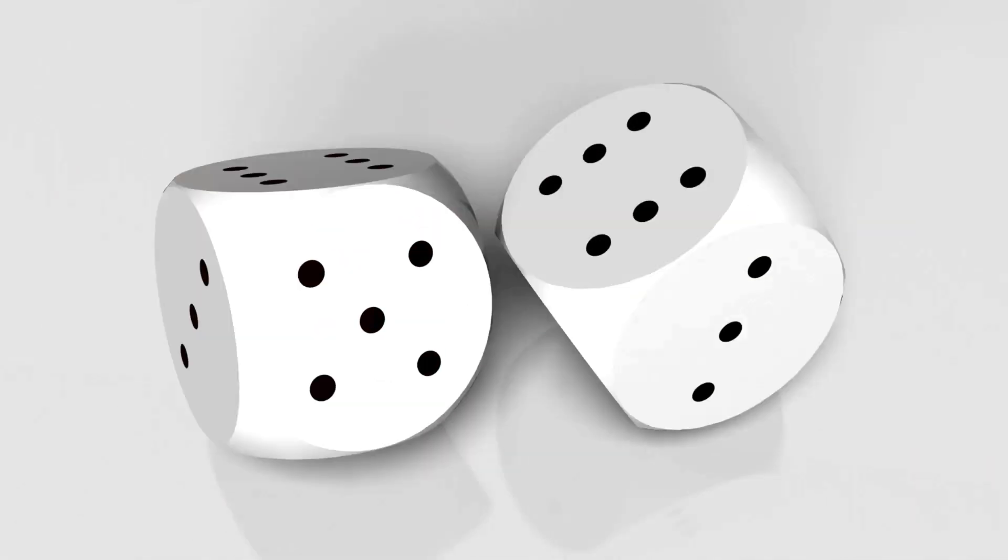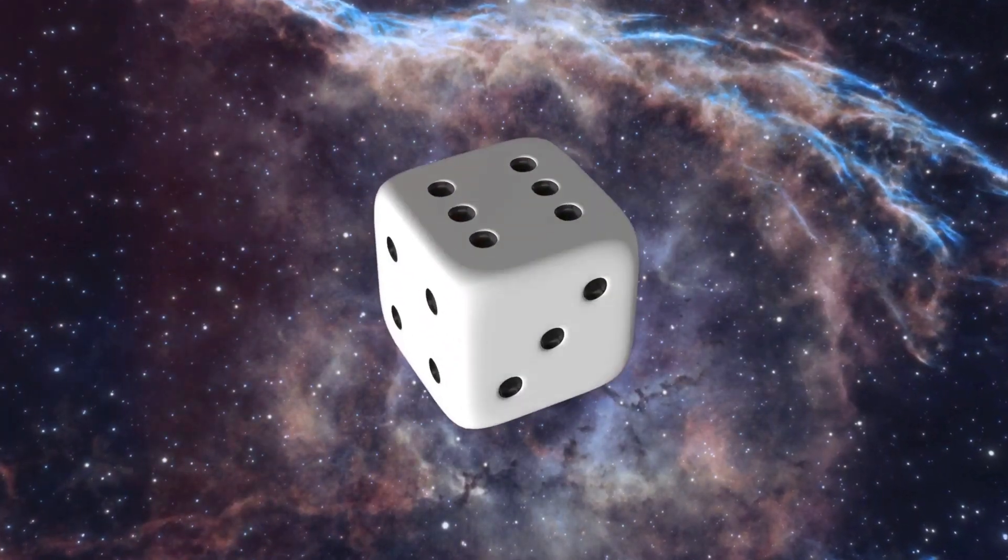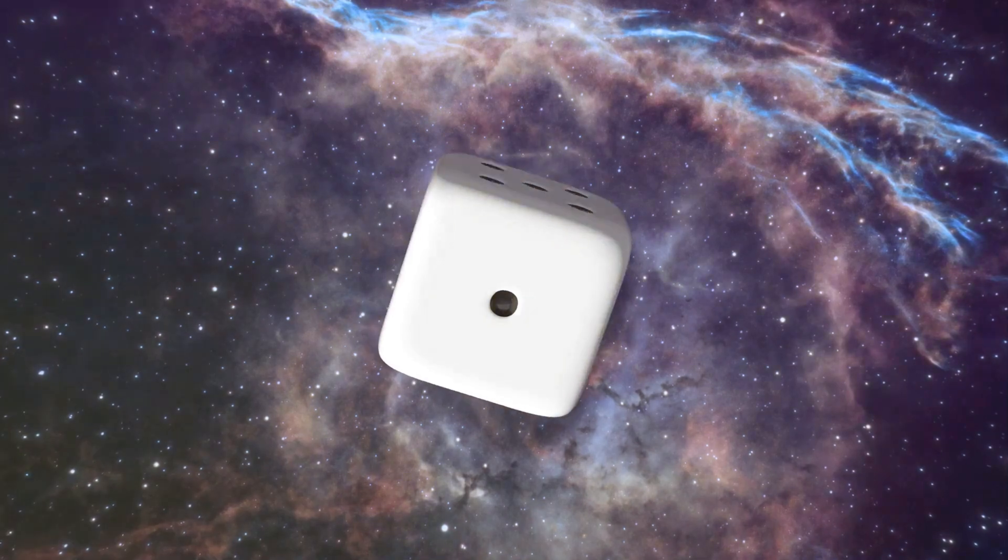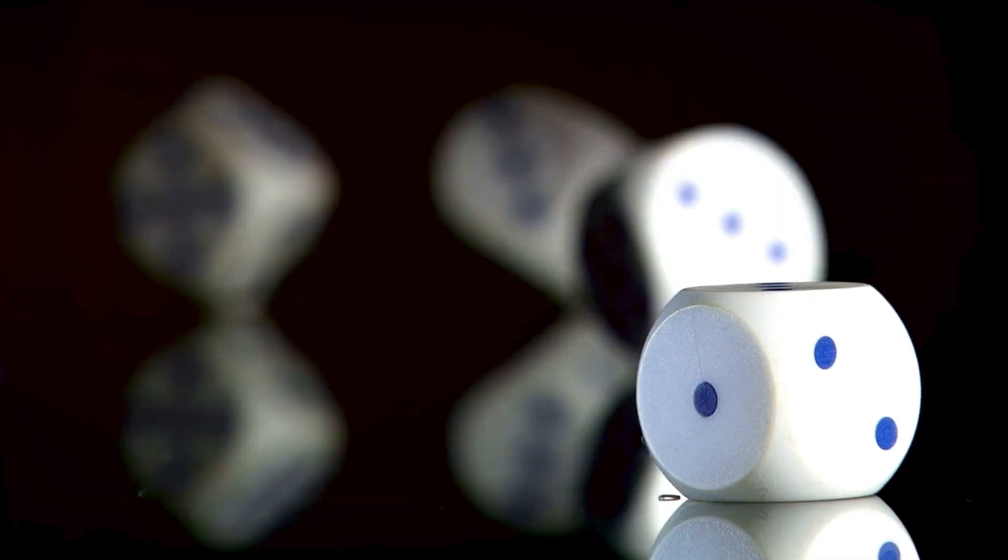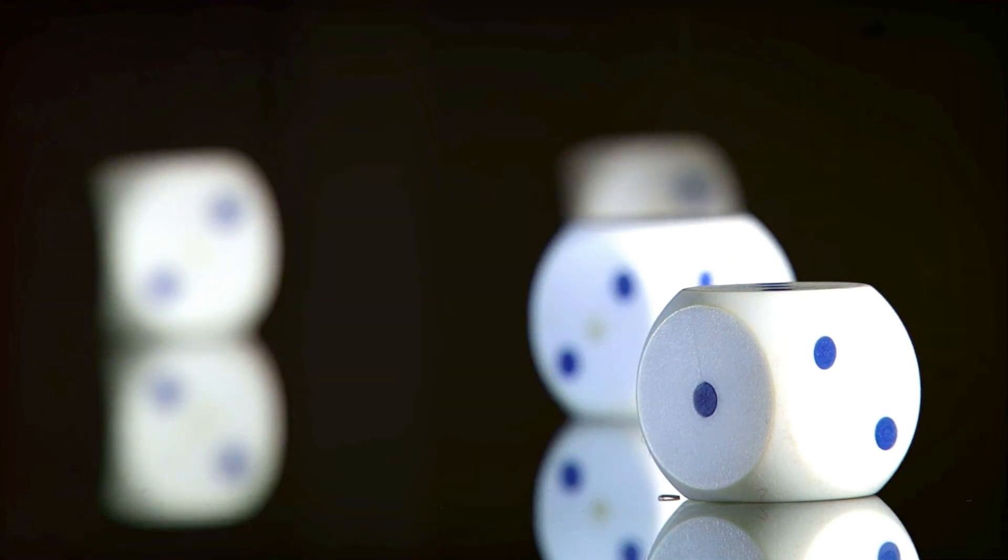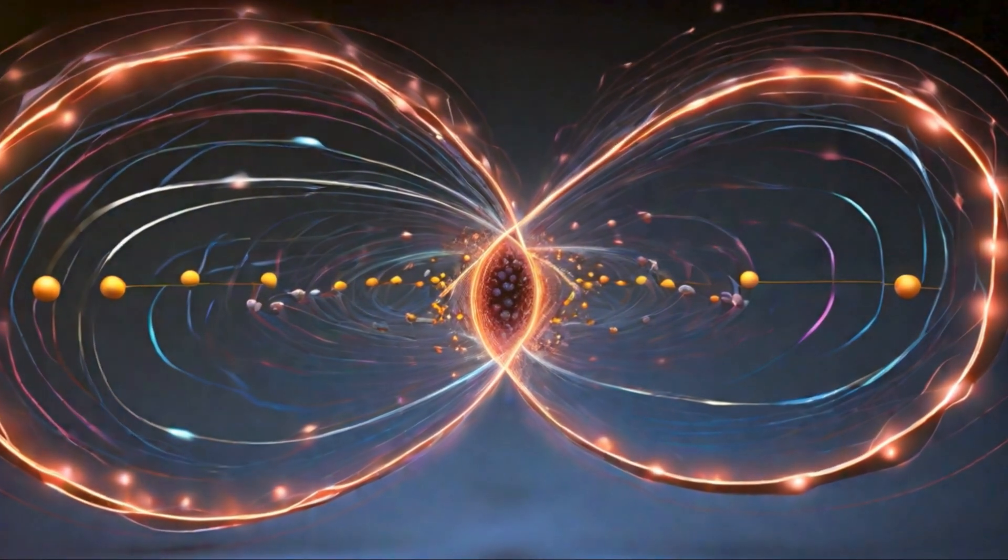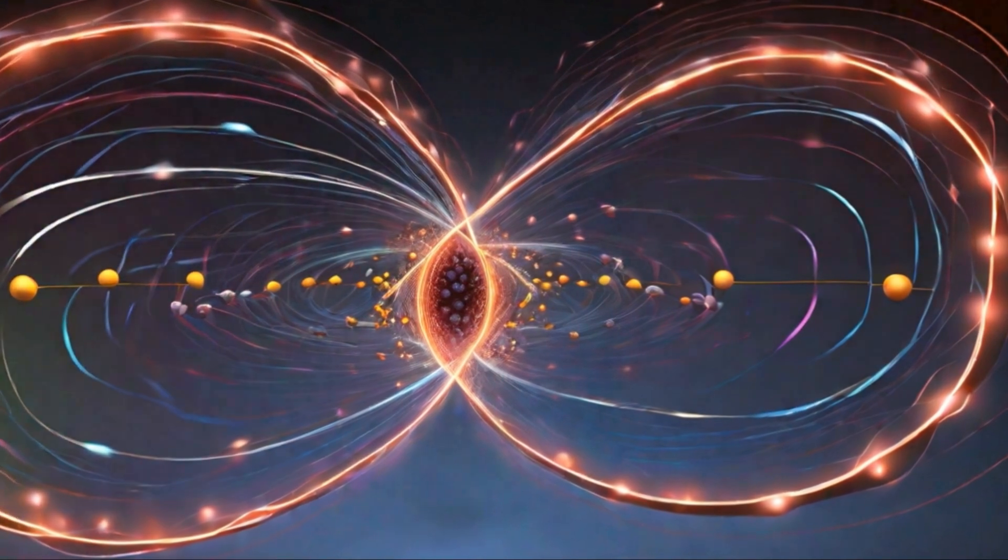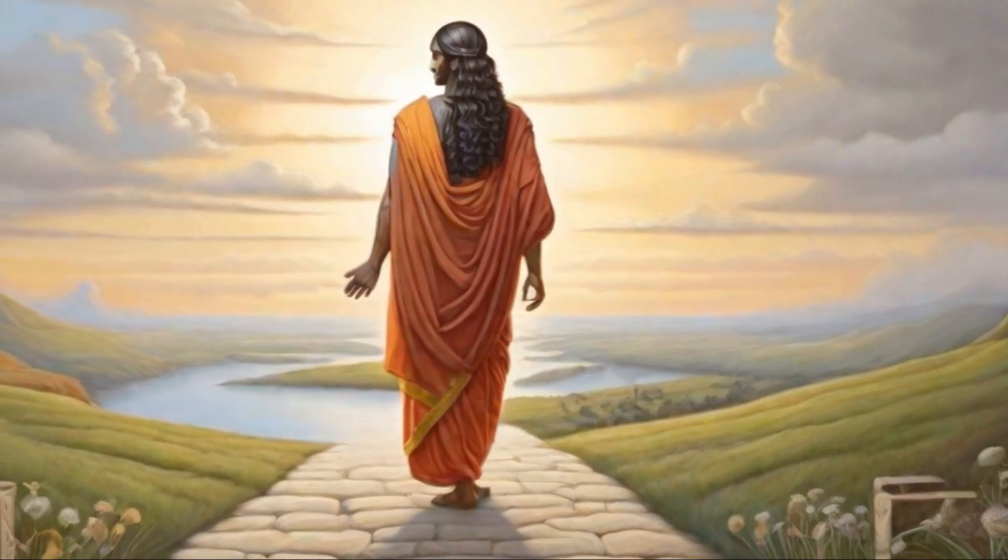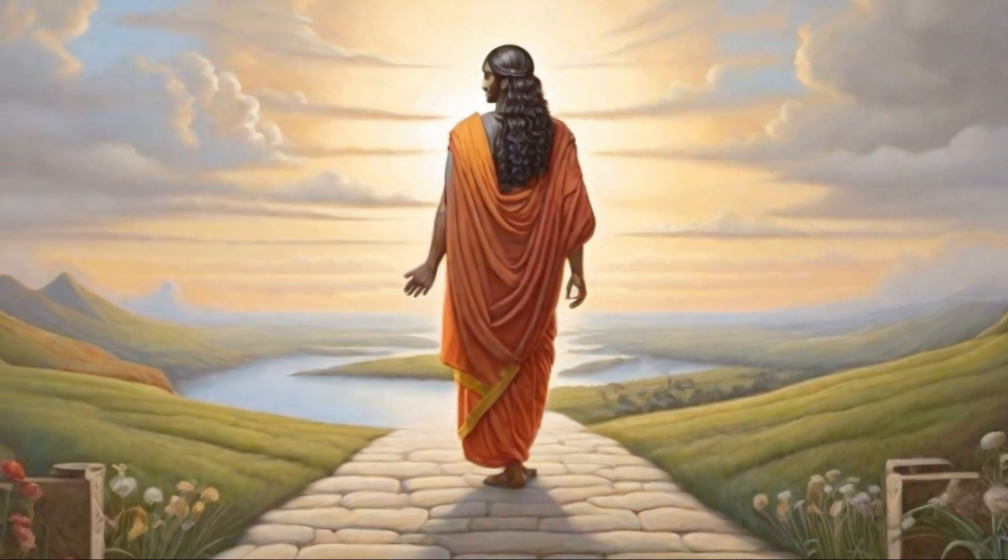Another principle is quantum entanglement. Let's think of a pair of dice. In our everyday world the roll of one die doesn't affect the other, but in the quantum realm two particles can become entangled, meaning the state of one instantly affects the state of the other no matter the distance between them. This instantaneous spooky action at a distance, as Einstein called it, is at the heart of quantum entanglement.